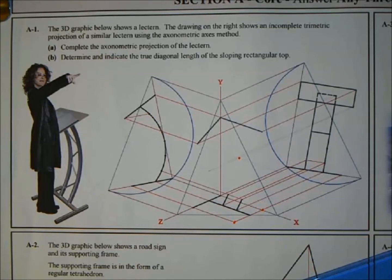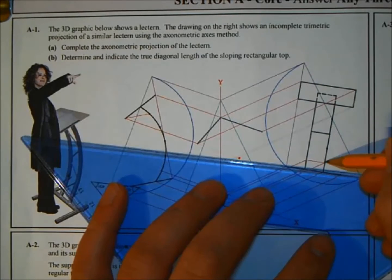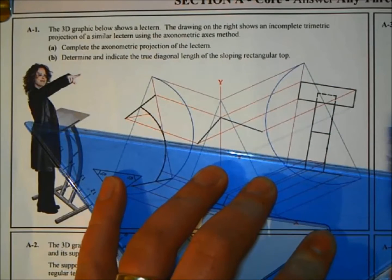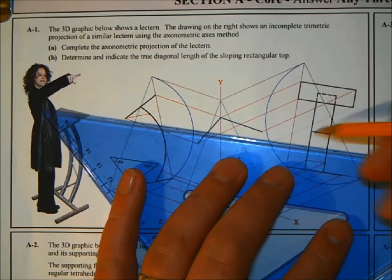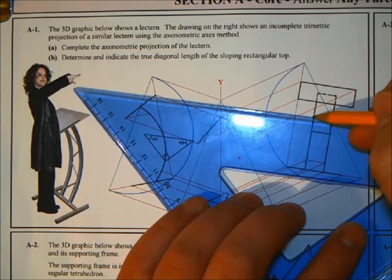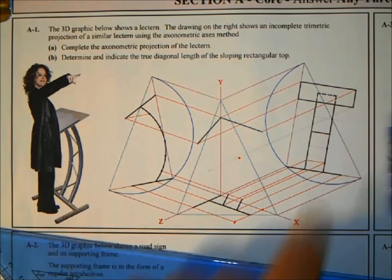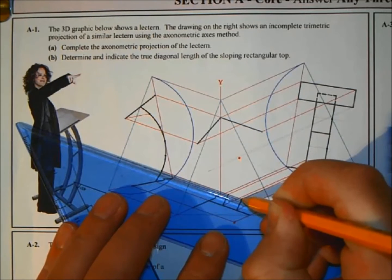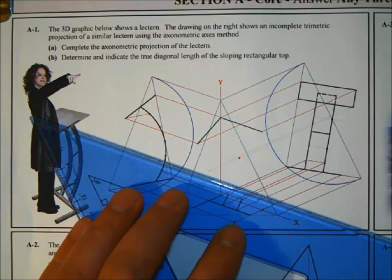What you need to do is project all those heights across your platform here, across the support part. That's giving us our points here, and we need to project down all of those lines, all of those heights from the end view. So that's our second point here.